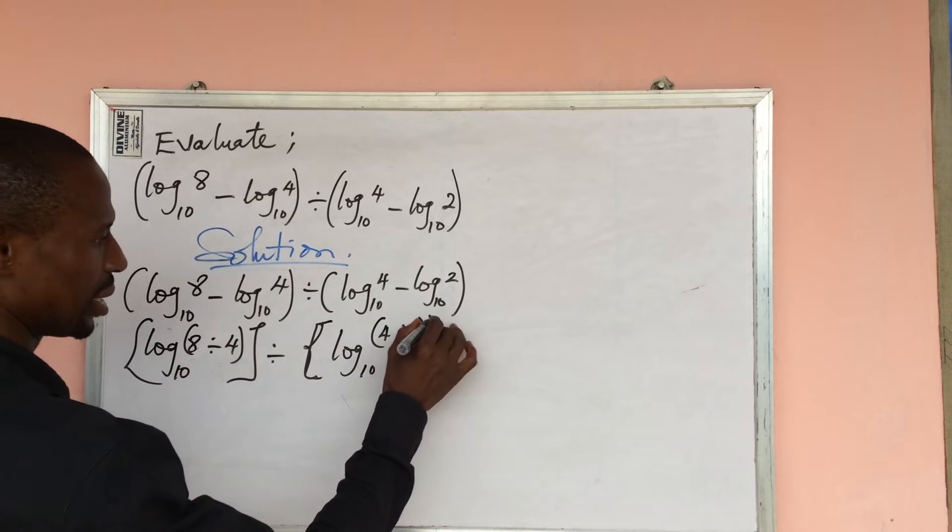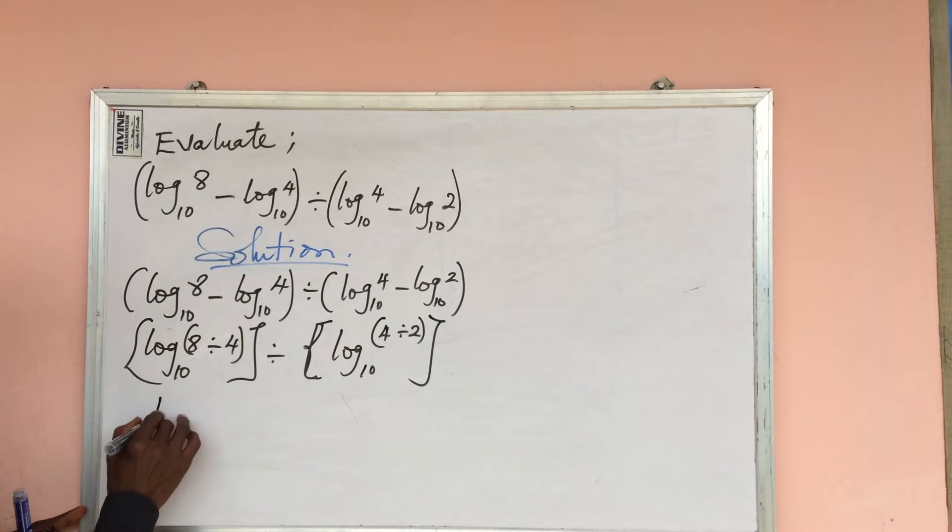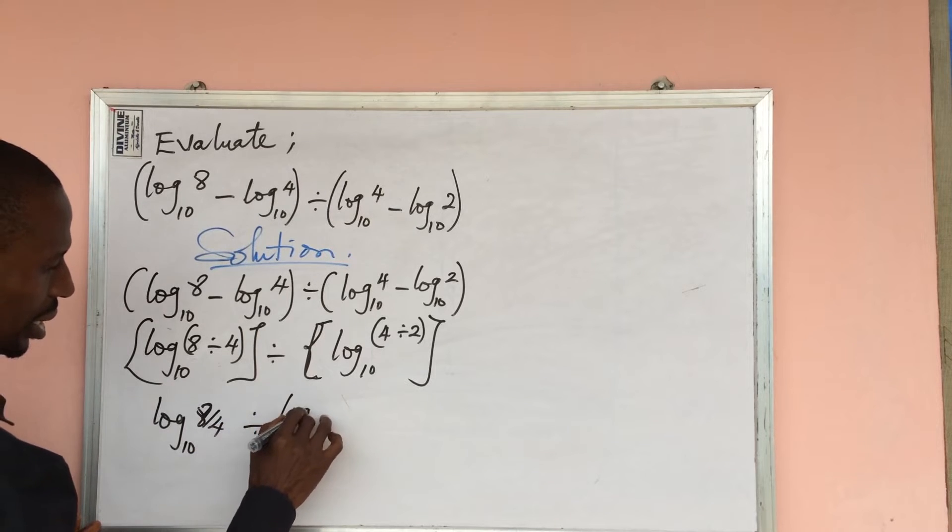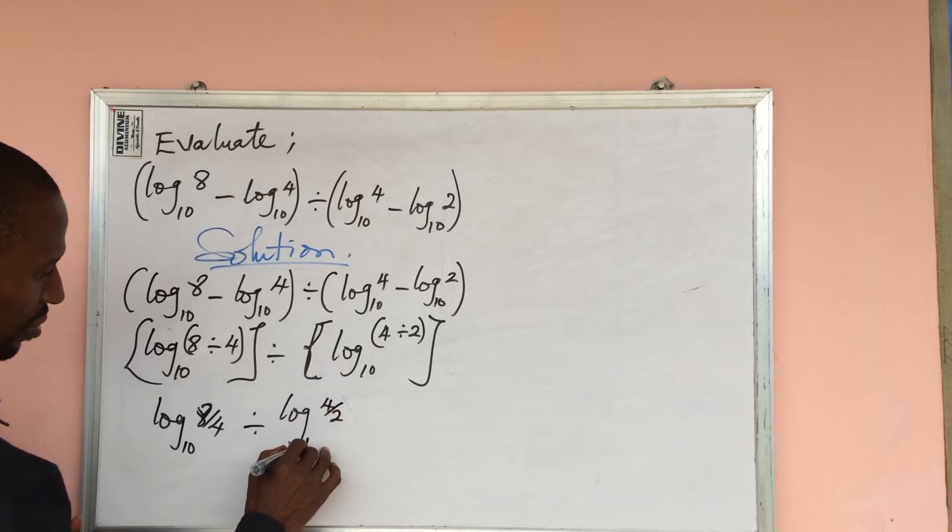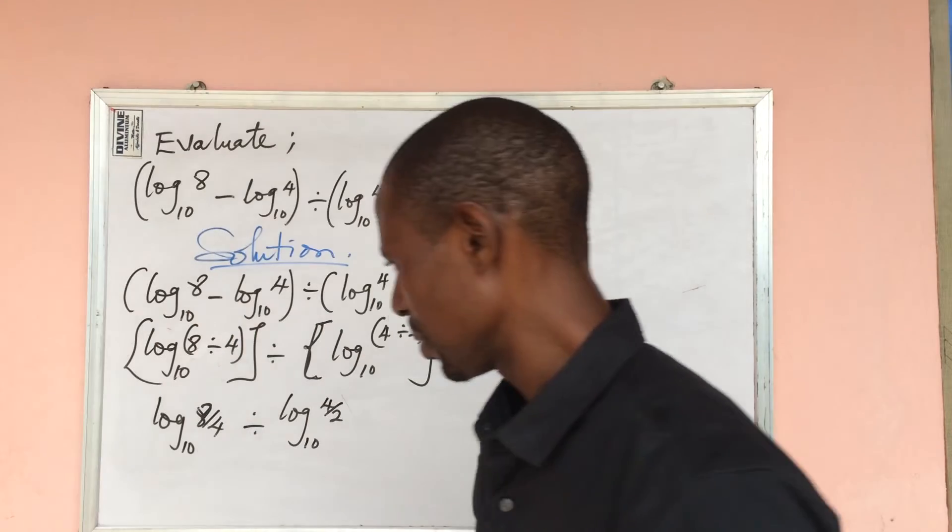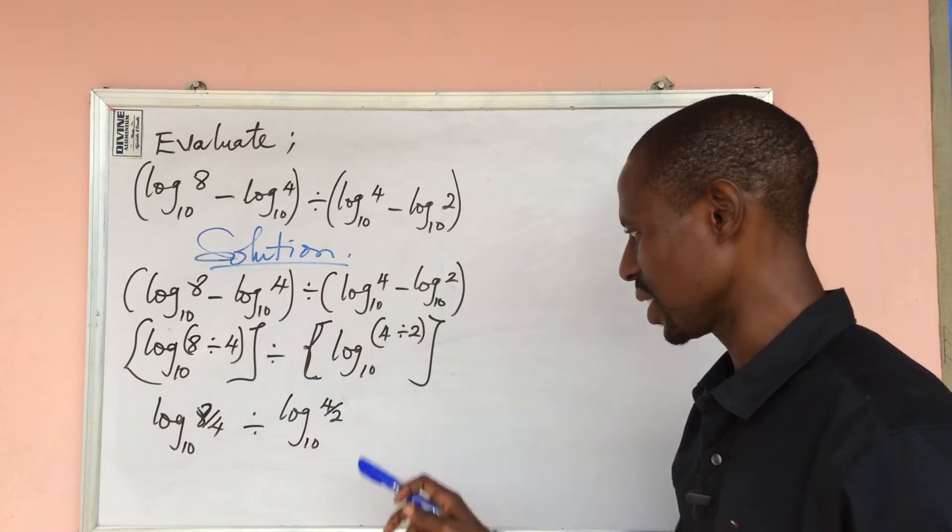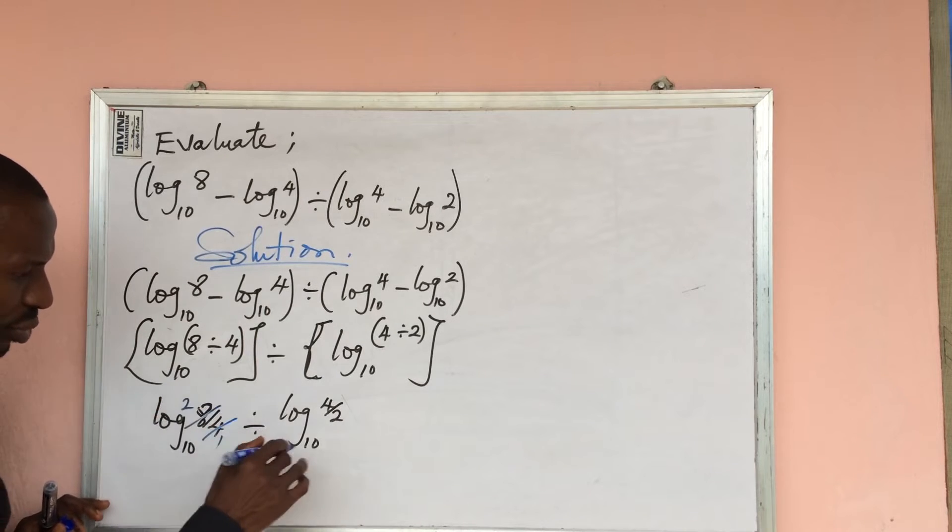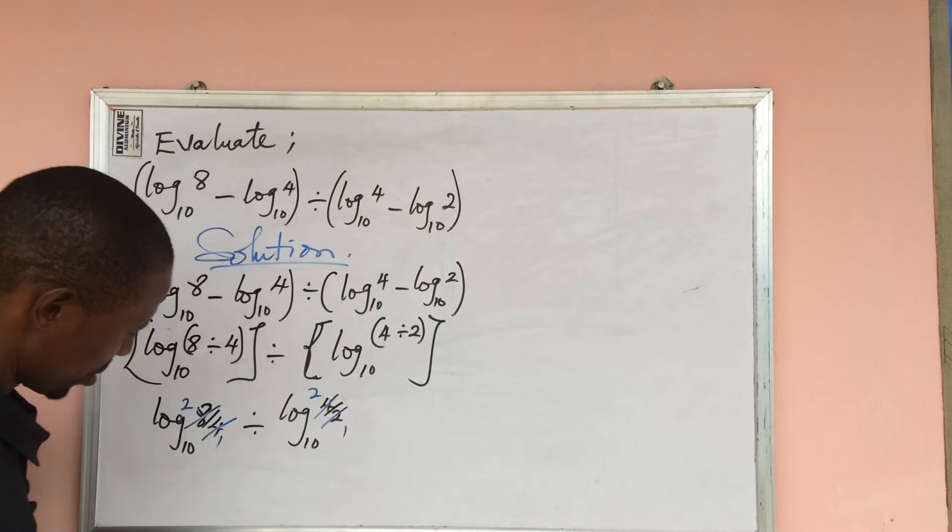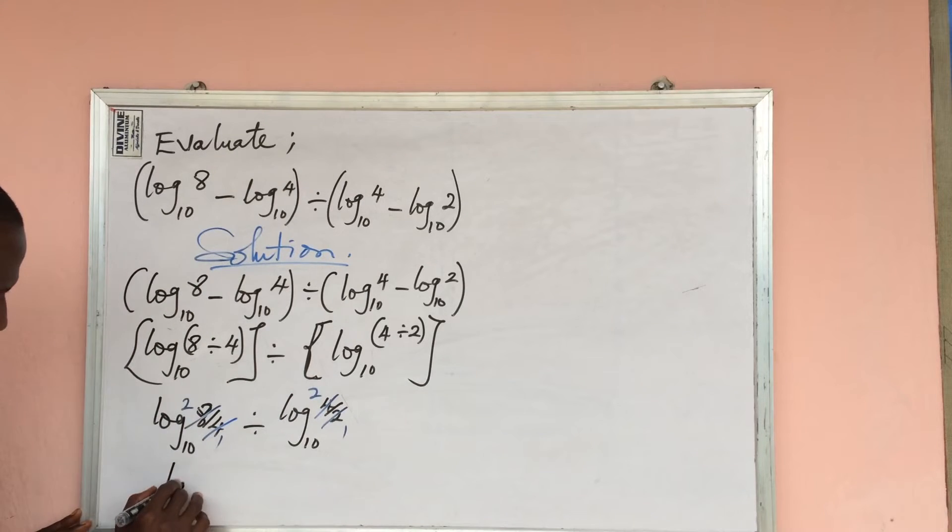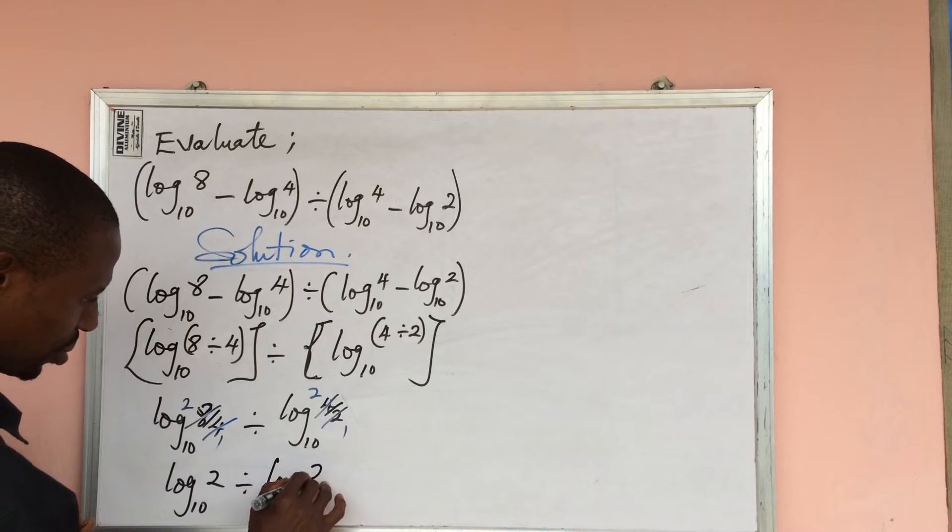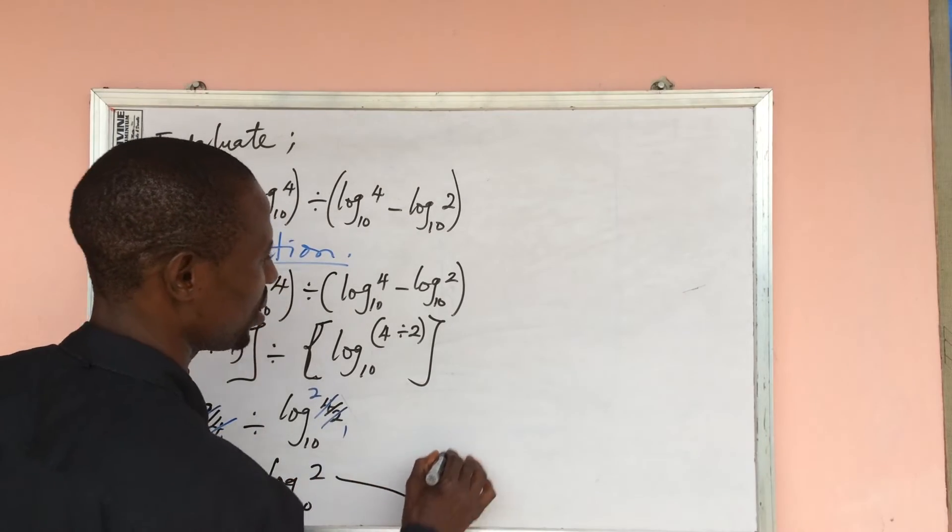This automatically will give us log 8 over 4 base 10 divided by log 4 over 2 base 10. Now we can simplify because 8 over 4 is 2, and 4 over 2 is 2. So we divide this, which gives us 4 over 1, then 2 over 1. So automatically we now have this to be log 2 base 10 divided by log 2 base 10. It's a very simple logarithm problem.